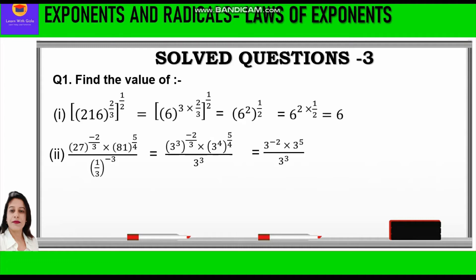Now we apply the laws: the 3s cancel in the first bracket and the 4s cancel in the second bracket, giving us 3 raised to power minus 2 into 3 raised to power 5, upon 3 cube. Whenever exponents are multiplied we add the powers, and when divided we subtract. So we write 3 raised to power (minus 2 plus 5 minus 3). Now minus 2 plus 5 is 3, and 3 minus 3 is 0, so we write 3 raised to power 0, which equals 1.